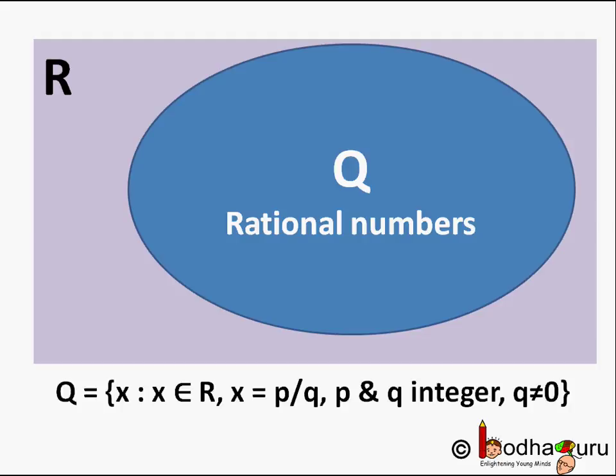So that is the set Q of rational numbers. And the space left in the rectangle must be representing all the irrational numbers. We denote it as Q', which means Q' is a set of elements x such that x belongs to the universal set of real numbers R, but x is not a rational number. X does not belong to Q.